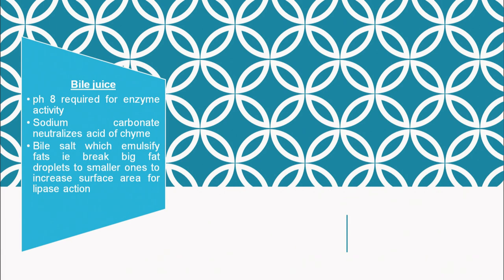The pH in the stomach was acidic, but once the chyme moves from the stomach into the intestine, the pH required for enzyme activity is around 8. The bile juice contains sodium carbonate, which neutralizes the acid of the chyme and changes the pH from acidic to basic. Bile juice also contains bile salts, which emulsify fat — breaking large fat droplets into smaller ones to increase the surface area for the action of lipase.